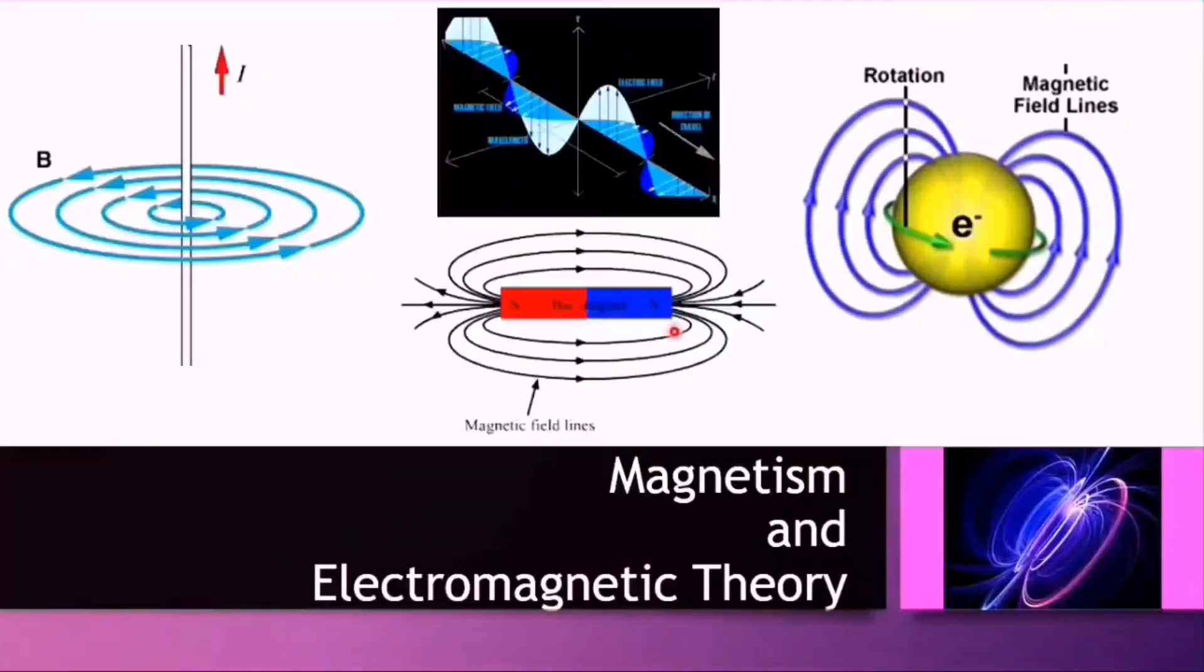Now, just to recap, today we understand how atomic structures of magnetic materials cause their magnetic properties. The motion of electric charges can take many forms, like an electric current in a conductor generates a magnetic field perpendicular to it.